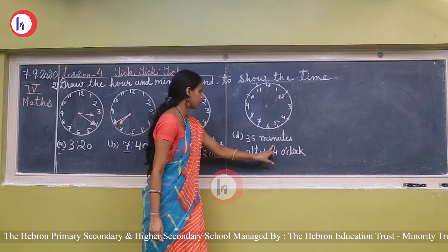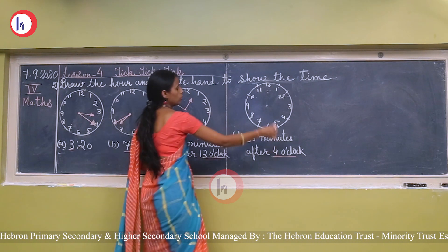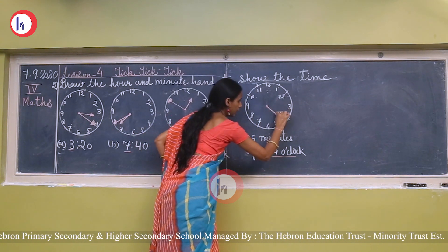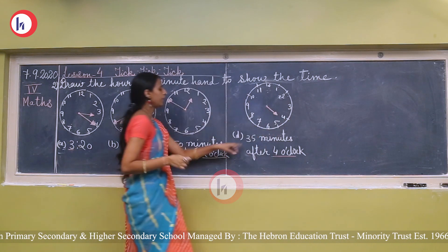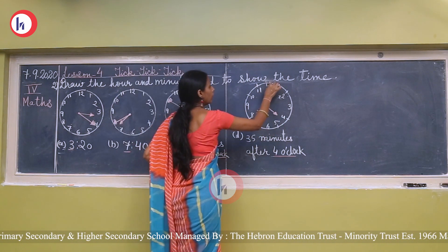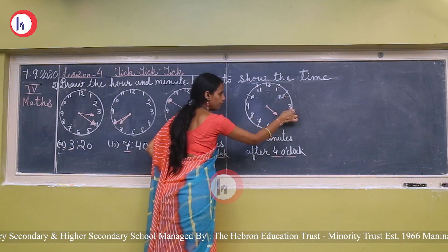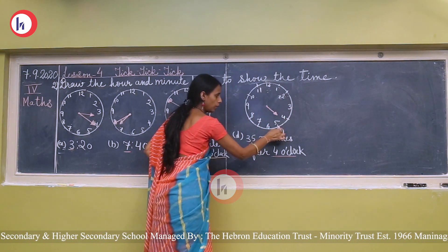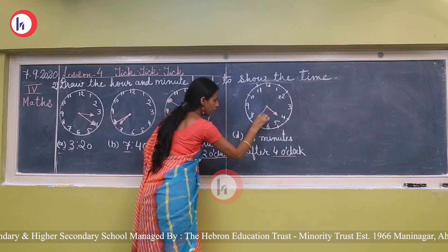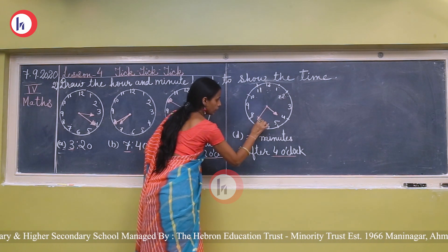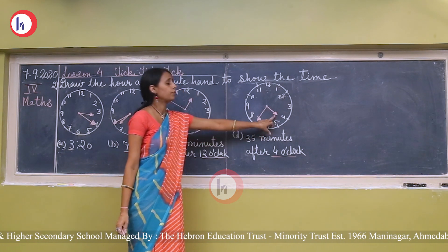Last question: 35 minutes after 4 o'clock. The hour hand will be between 4 and 5. For the minute hand, count: 5 for 5, 5 for 10, 5 for 15, 5 for 20, 5 for 25, 5 for 30, and 5 for 35 — so the minute hand will be on 7. In this way, we can show 35 minutes after 4 on the clock.